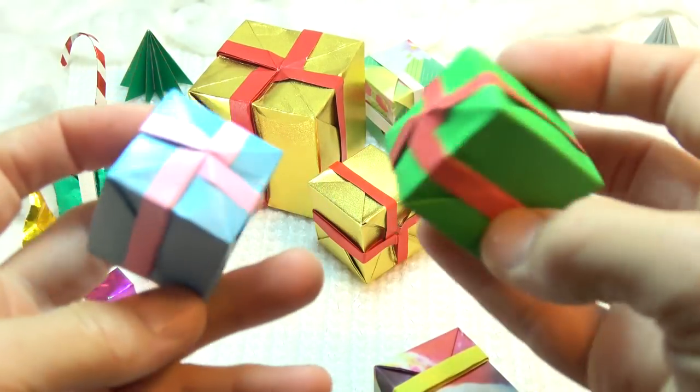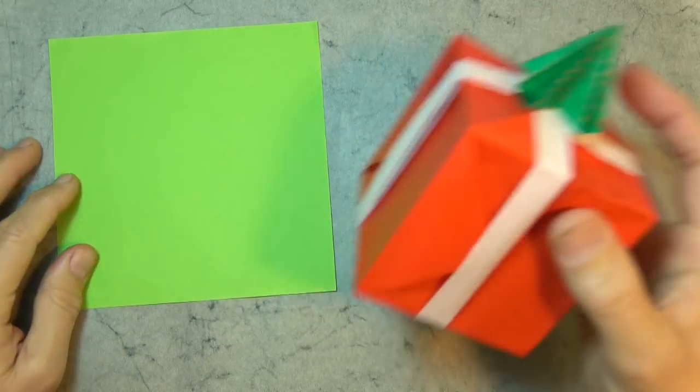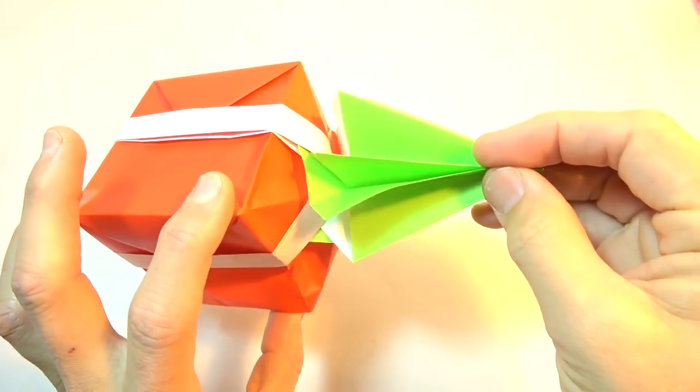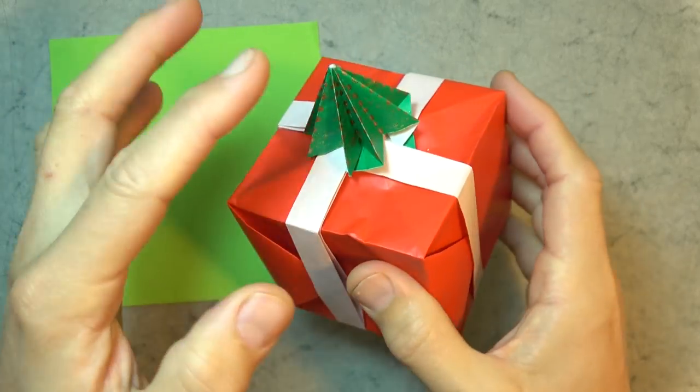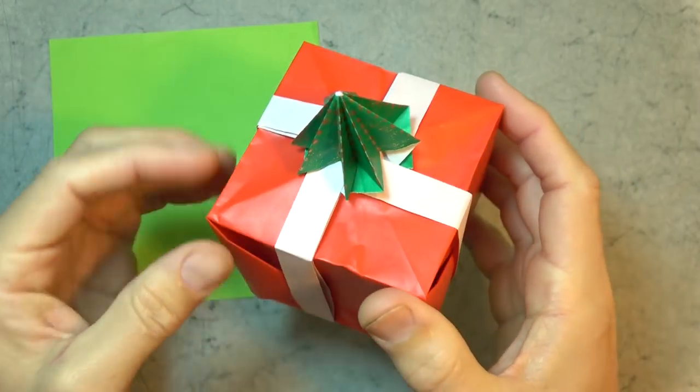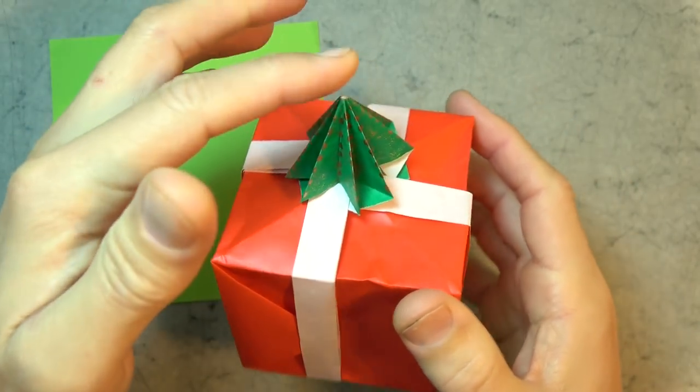So a few days ago I showed you how to fold this present. Well now I'm going to show you how to fold this Christmas tree on the present. Now this box was folded out of a 13 inch square, and this tree was folded from a 3 inch square, so just a lot smaller.